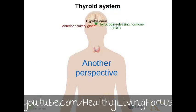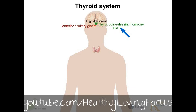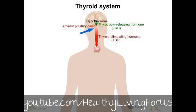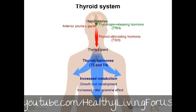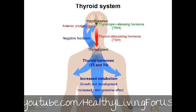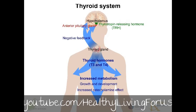Now, let's look at this from another perspective. The hypothalamus produces thyrotropin-releasing hormone, TRH, which acts on the anterior or front part of the pituitary gland. The pituitary gland produces thyroid-stimulating hormone, TSH, which then acts on the thyroid gland. The thyroid gland then produces the thyroid hormones, T4 and T3, which are released into the body, where they increase the metabolism and affect growth and development. A negative feedback loop is present in that as the levels of T4 and T3 increase, a signal is sent to the pituitary gland and the hypothalamus, causing levels of TSH to be reduced, thus reducing the production of TSH and keeping the levels in check.